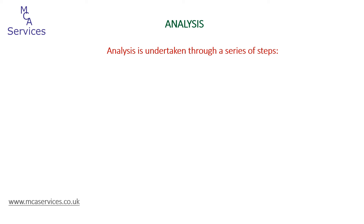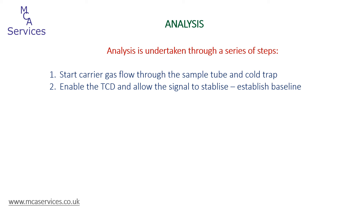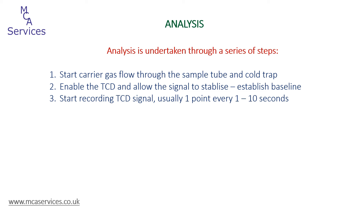Analysis is undertaken following a series of pre-programmed steps to form an experiment. A typical procedure for temperature programmed reduction, oxidation, or decomposition follows the same common steps. The flow of carrier gas is started so that the analysis stream passes through the sample, through the cold trap, and onto the TCD. The TCD is then enabled and the signal is allowed to stabilise to form a baseline. We then start recording the TCD signal — typically one point every one to ten seconds, depending on the duration of the analysis. We then start to heat the sample; a good starting ramp rate is around about 10 degrees C per minute, but again that can be varied.